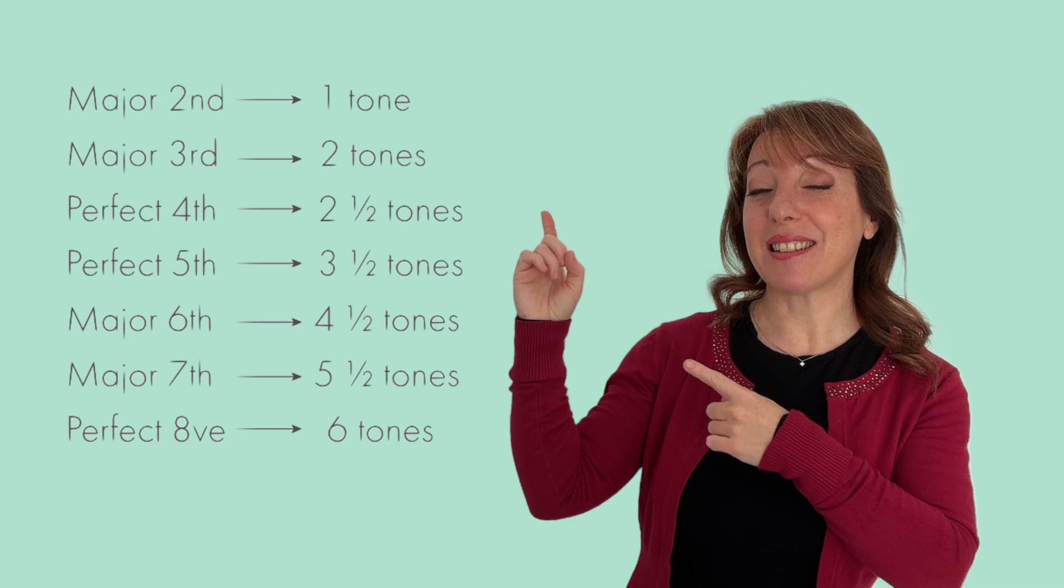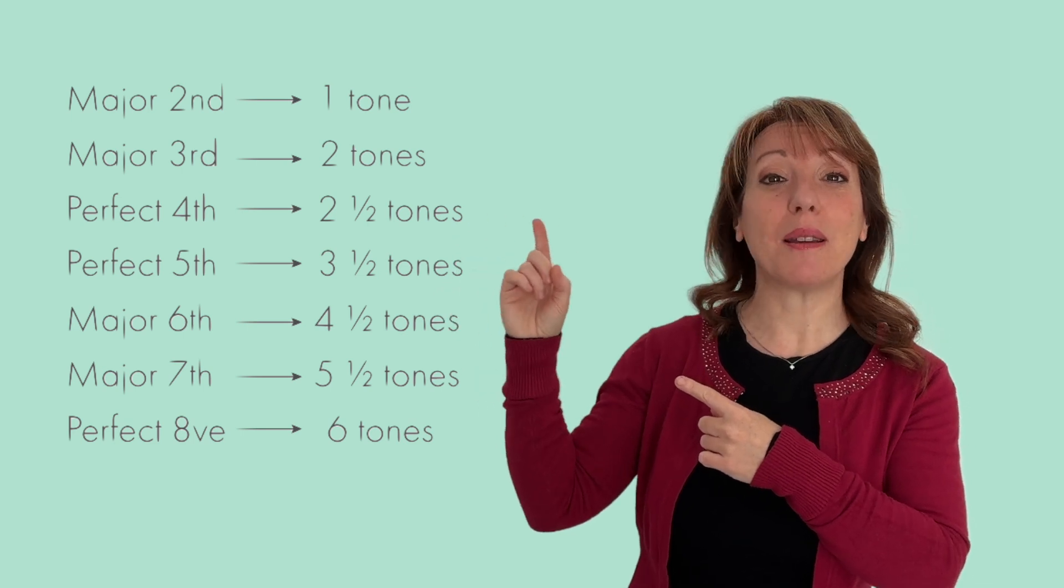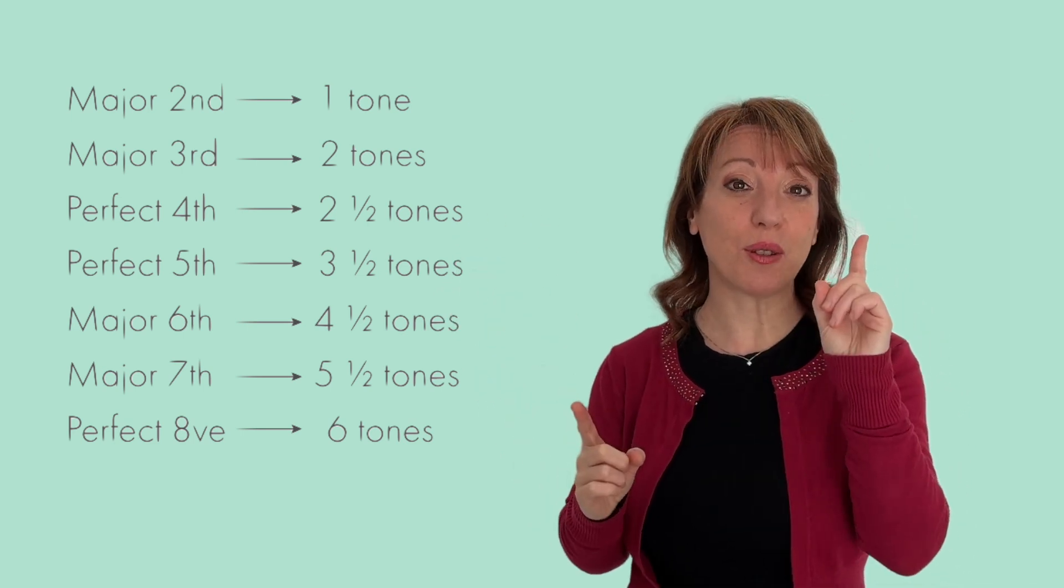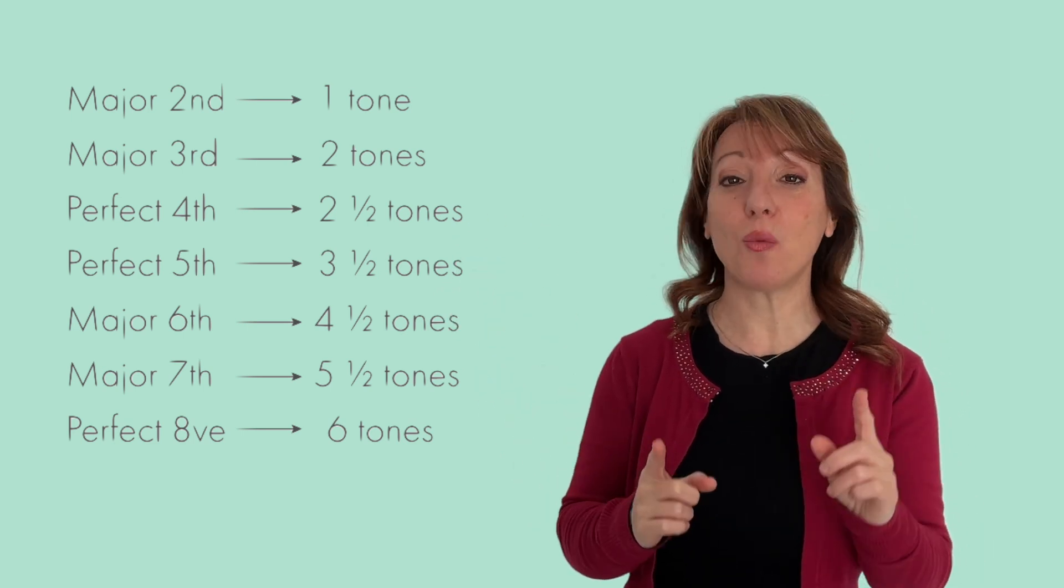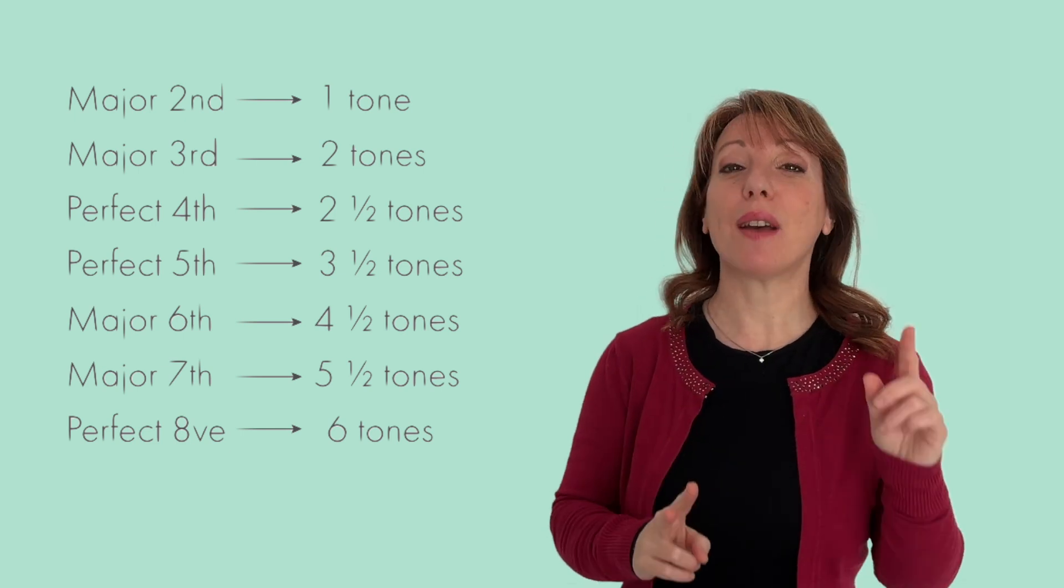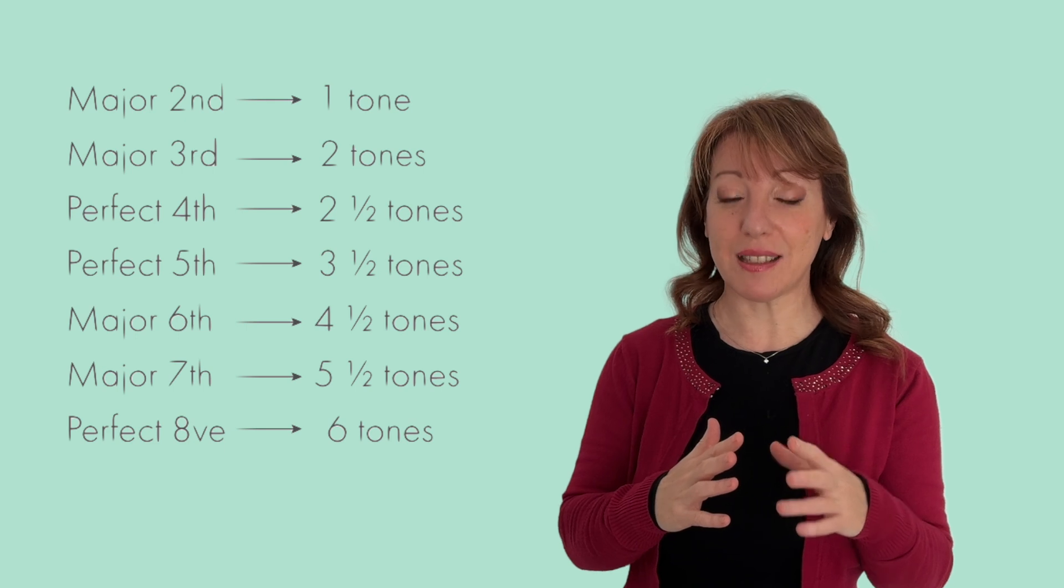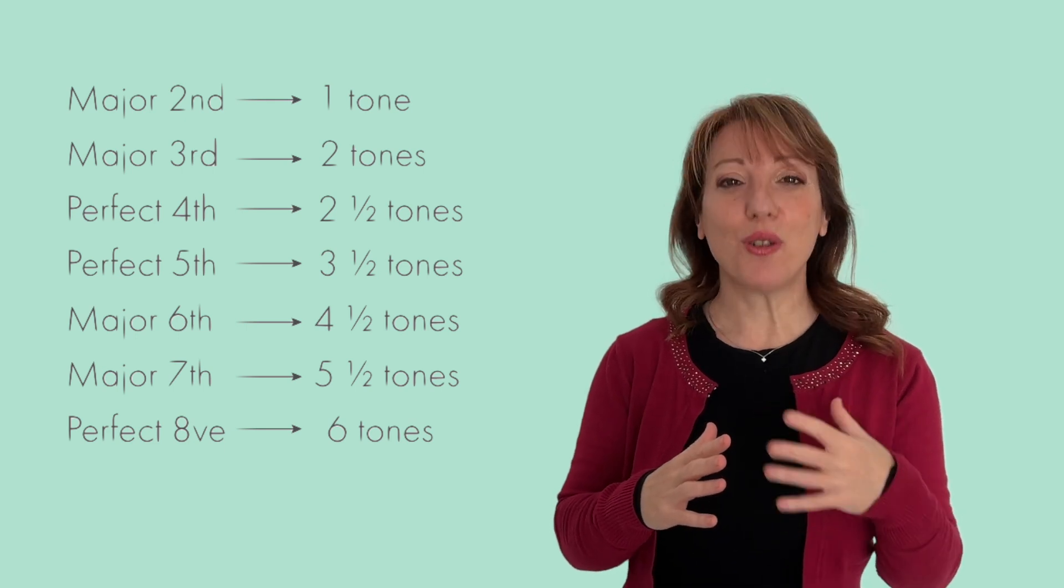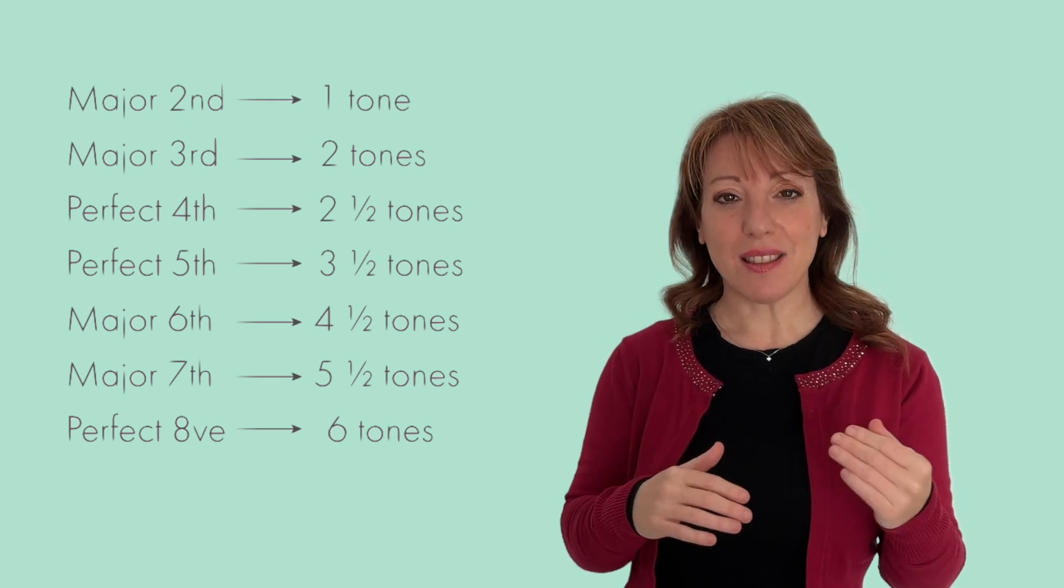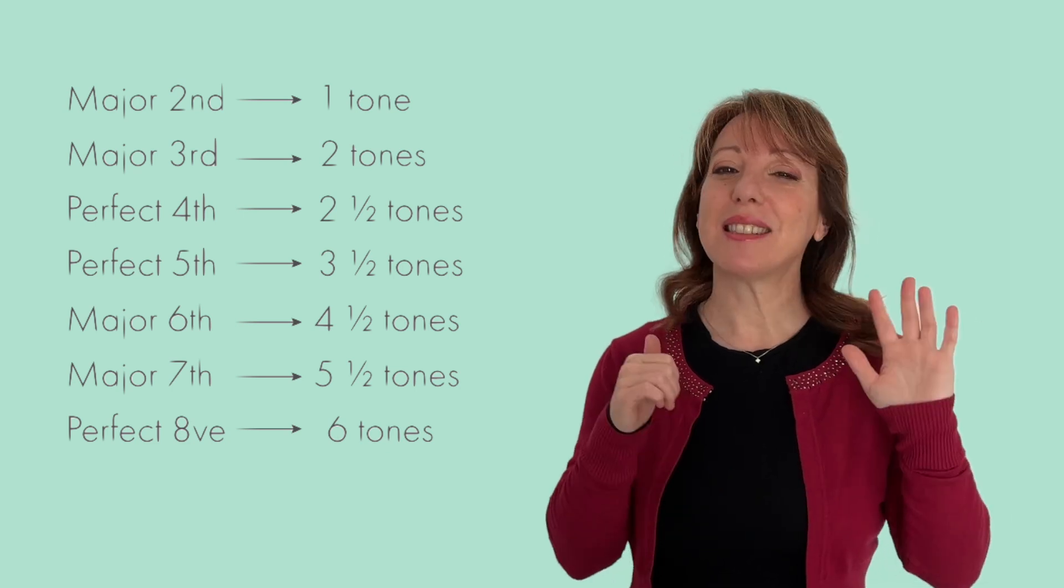So a third, we said, can only be major, but we need to remember now how many tones and semitones a major interval has. Look at this and you can see that a second can only be major if it has one tone. A third is major when it has two tones. Then we have a fourth, two and a half tones. A fifth, three and a half tones. A sixth, four and a half tones. A seventh, five and a half tones. An octave, six tones.